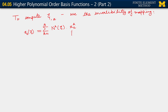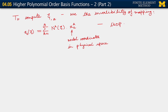And you recall what these are — they are our nodal coordinates in the physical domain or physical space. This is the isoparametric mapping: isoparametric because we are using the same parametrization for the trial solution and weighting function as well as for the geometry.